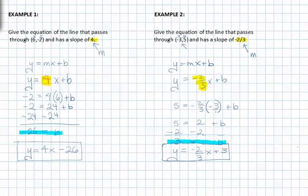I can now rewrite the equation of the line I've been looking for in slope-intercept form, and I get y equals -2/3 x plus 3, and that's the equation of the line that we were asked for.